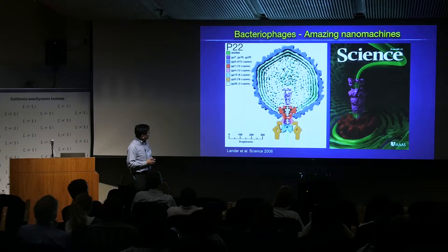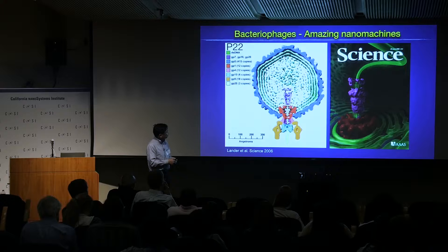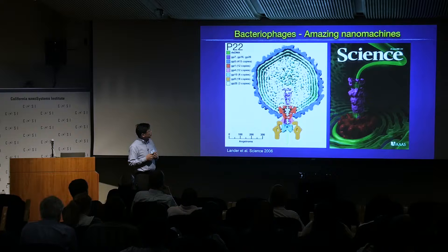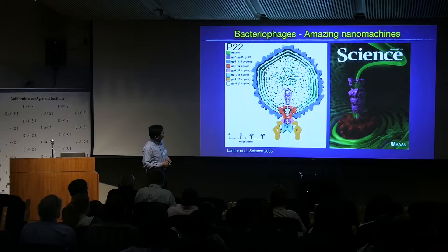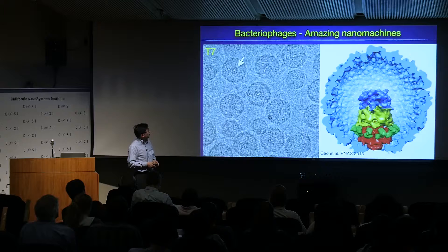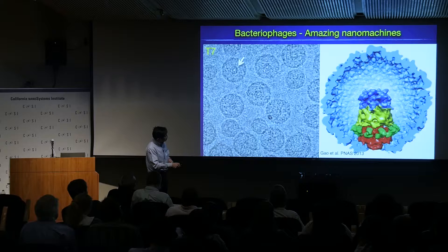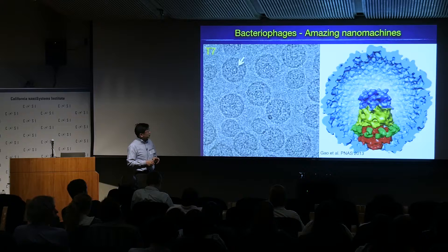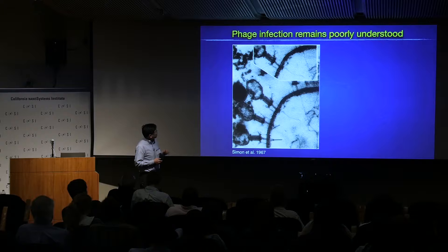When Gabriel Lander was a graduate student 12 years ago, he did beautiful work on another phage called P22 — a very short tail phage packed with DNA and a nice tail machine. He was probably one of the first people to do asymmetric reconstruction so you can see the portal. There are also so-called ejection proteins stored inside the capsid, and their exact location was not initially known for P22.